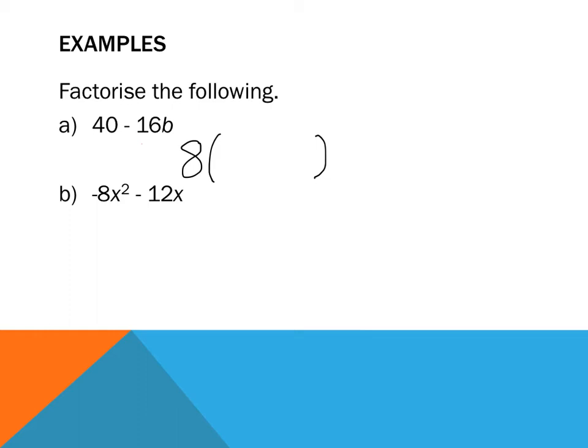Brackets mean multiply. So what do I have to multiply 8 by to get to 40? Well that's pretty easy, 5. Then the next thing is what do I have to multiply 8 by to get negative 16b? Well if that 8's a positive I'm going to multiply it by a negative. 8 into 16. 8 ones are 8, 8 twos are 16. And then what's left over? B. So I think my answer is 8 brackets 5 minus 2b.